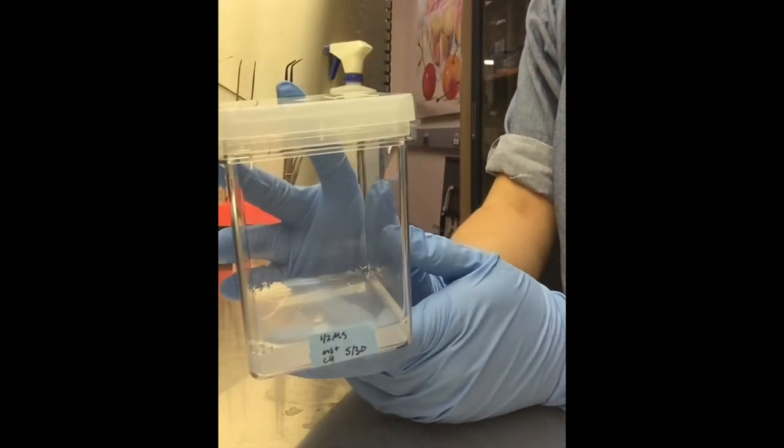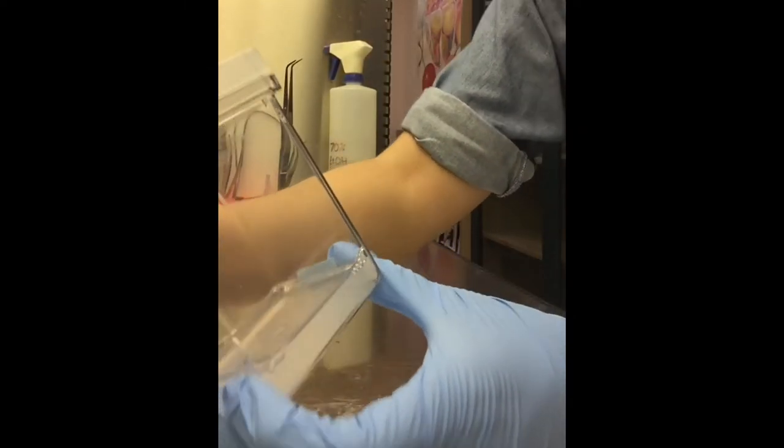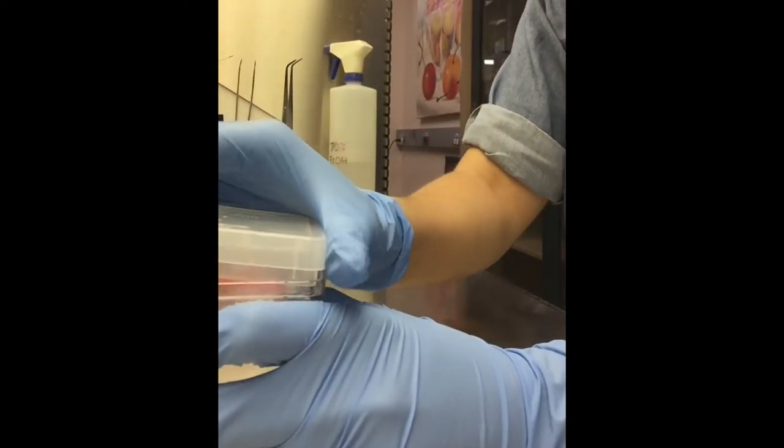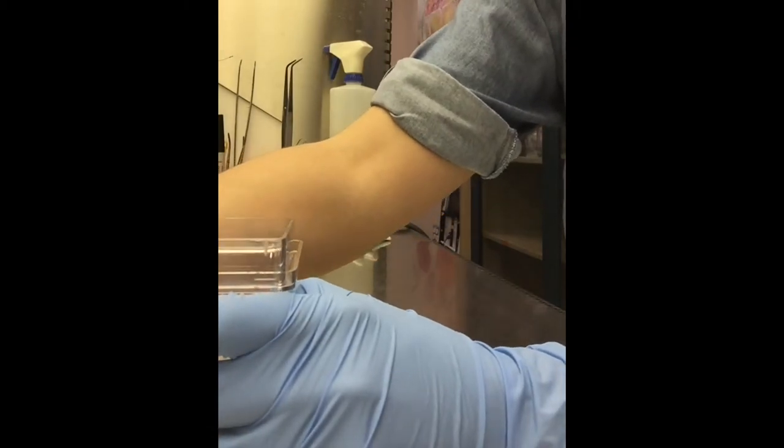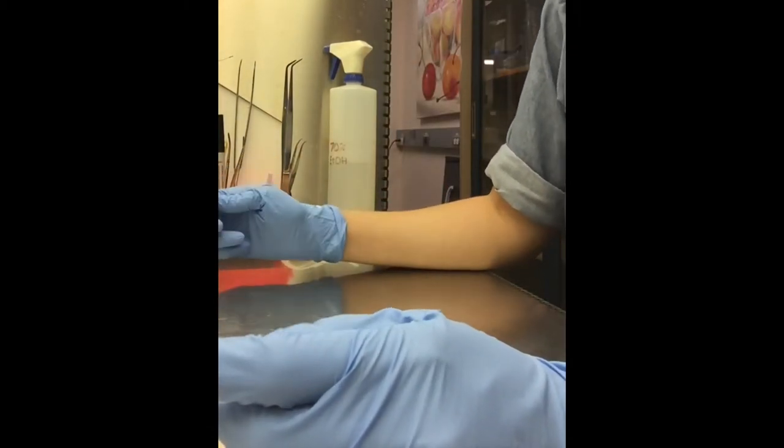Get out one of our GA7s. This has our half MS media. The reason we use half MS instead of full MS is because the seeds don't need all of the nutrients that are in the full MS, so it would be a waste to make it full.